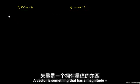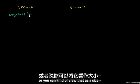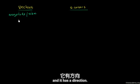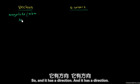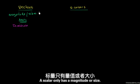A vector is something that has a magnitude — you could view that as a size — and it has a direction. A scalar only has a magnitude or size.